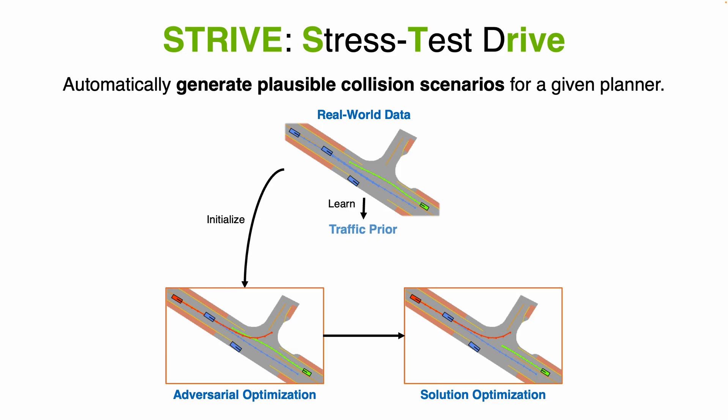To ensure scenarios are realistic, our key idea is to learn a model of traffic motion from real-world data. Both optimizations are performed in the latent space of this traffic model, which acts as a prior to maintain scenario plausibility.